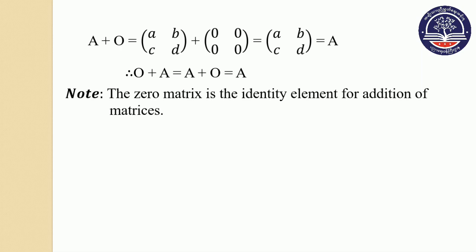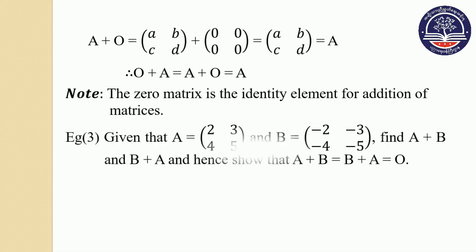Let A be equal to 2, 3, 4, 5 and B is equal to minus 2, minus 3, minus 4, minus 5. So we can see A plus B is equal to zero.